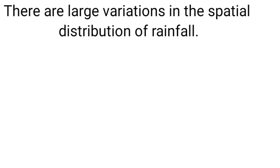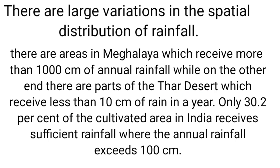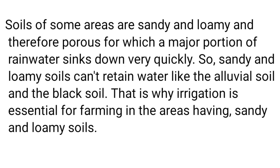There is large variation in the spatial distribution of rainfall. Areas like Meghalaya receive 1,000 centimeters of rainfall, while the Thar Desert receives only 10 centimeters. Only 30% of the cultivated area in India receives sustainable rainfall of 100 centimeters. Some soils like sandy and loamy are very porous and cannot retain moisture.